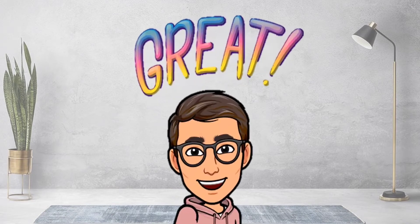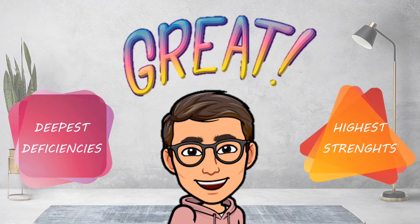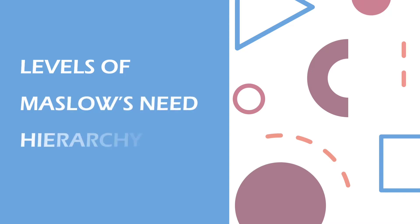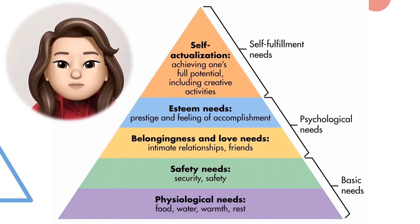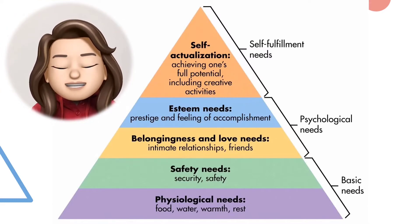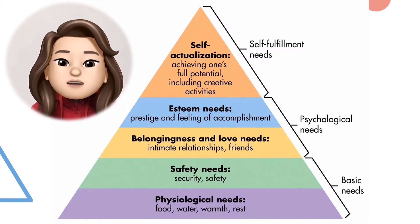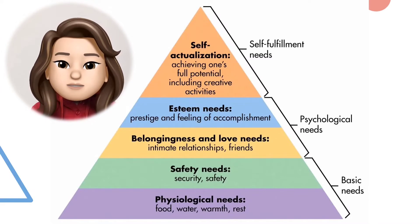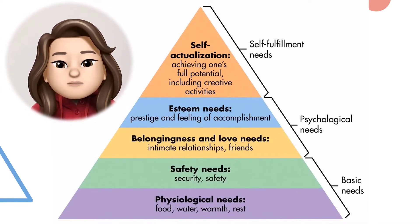Great! I will apply this theory to understand my deepest deficiencies and challenges as well as my highest strengths. What are the levels of Maslow's hierarchy of needs? Maslow's theory presents his hierarchy of needs in a pyramid shape, with basic needs at the bottom of the pyramid and more high-level intangible needs at the top. The levels, starting from the base of the pyramid, are: physiological needs, safety and security needs, social needs, esteem needs, and self-actualization needs.